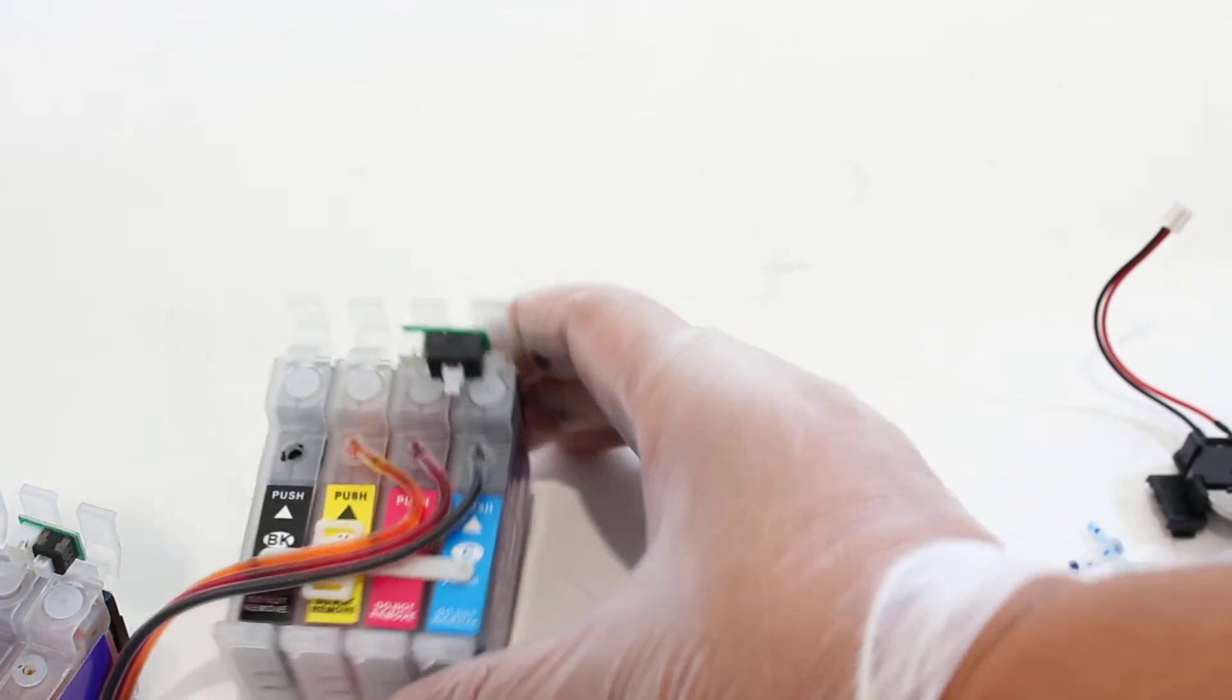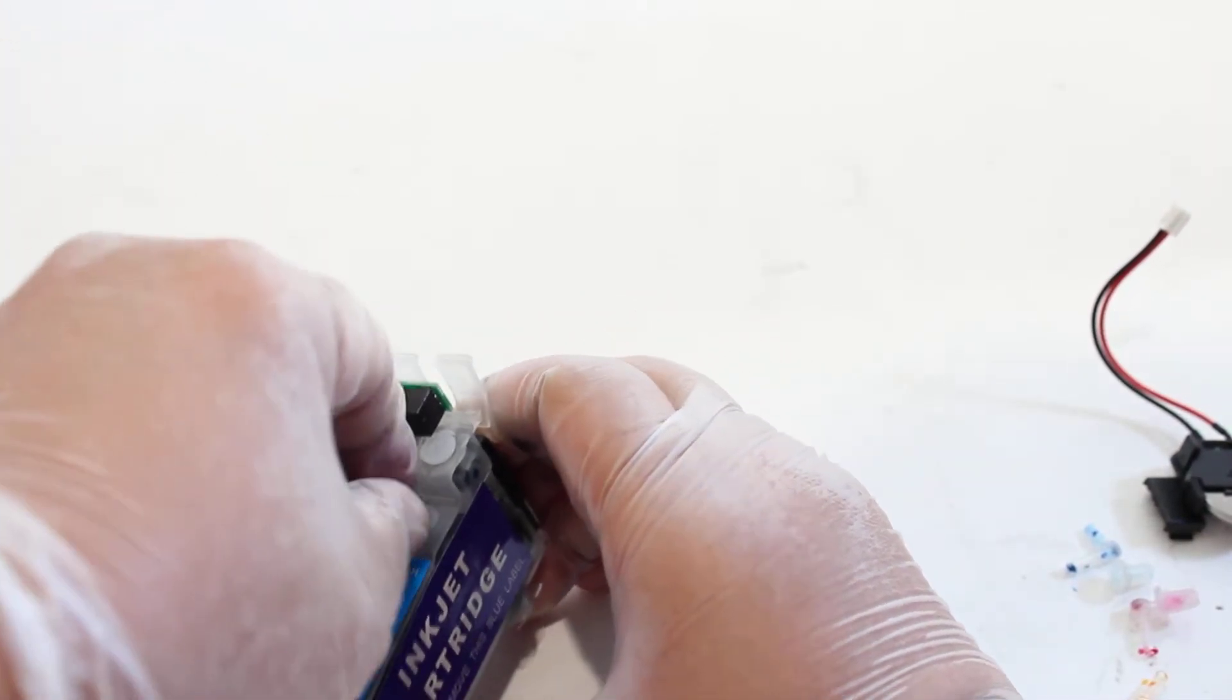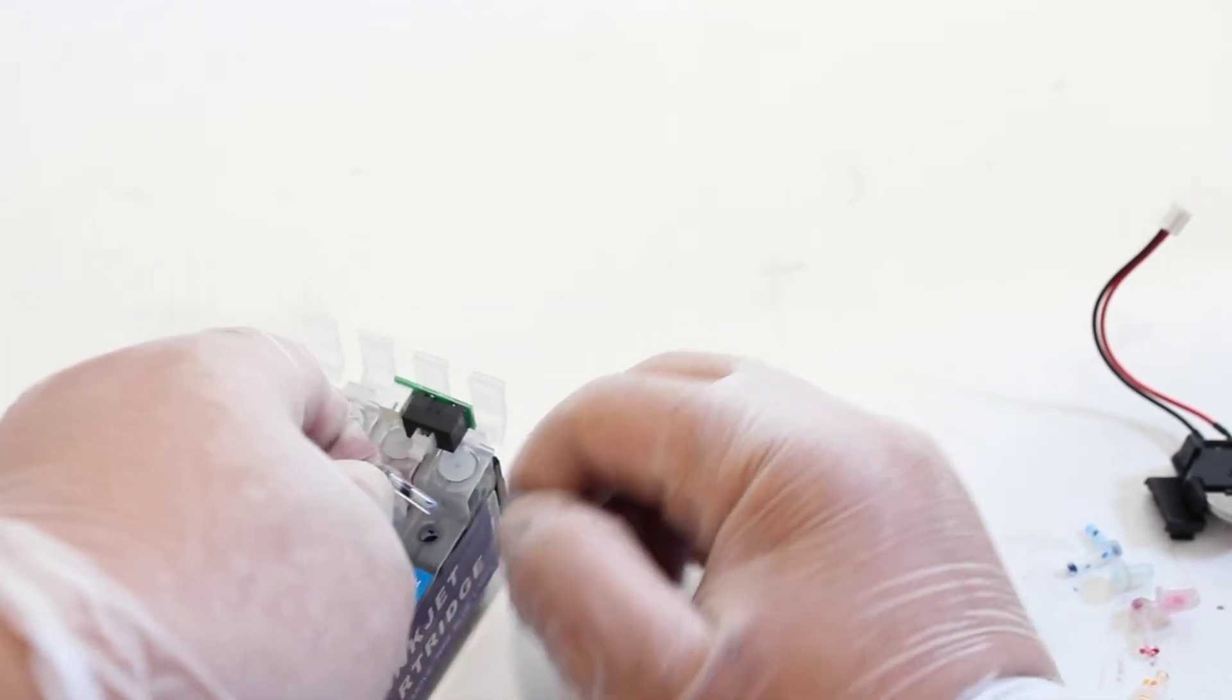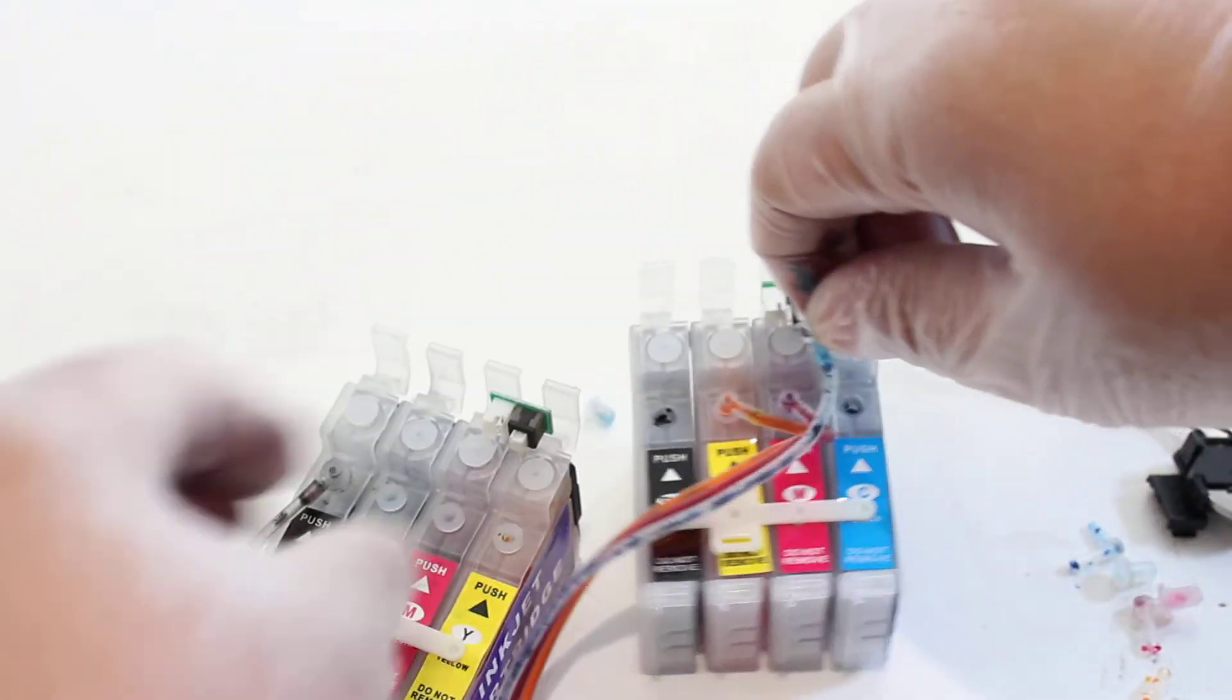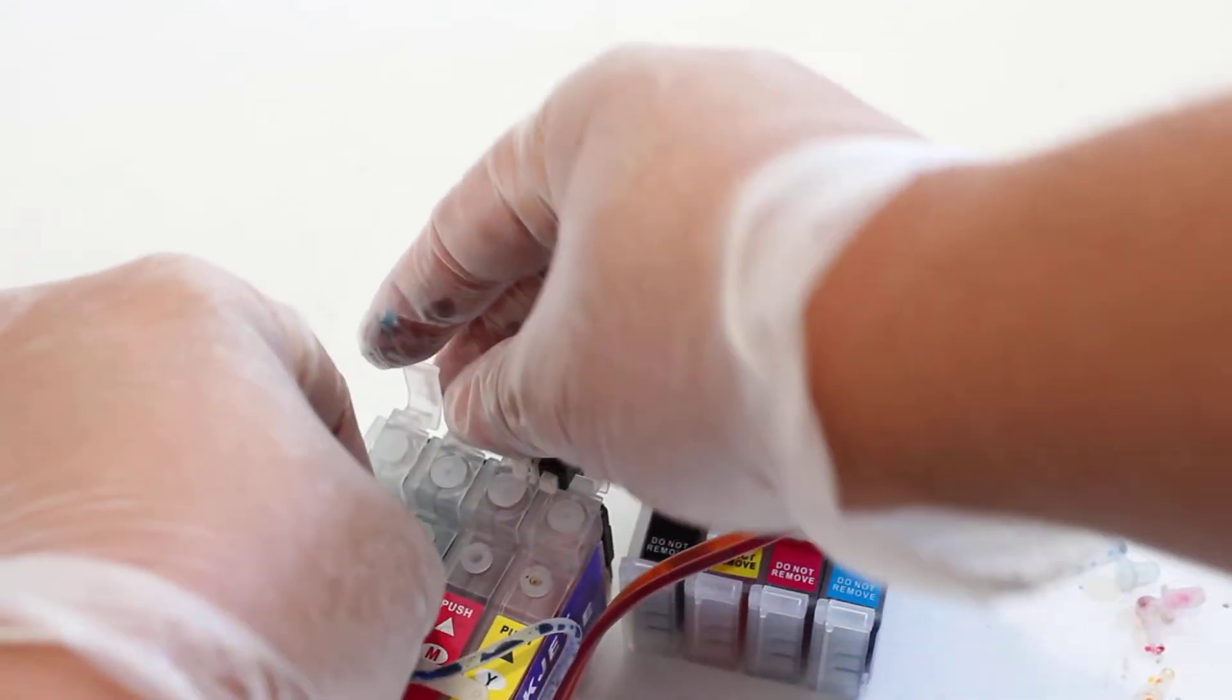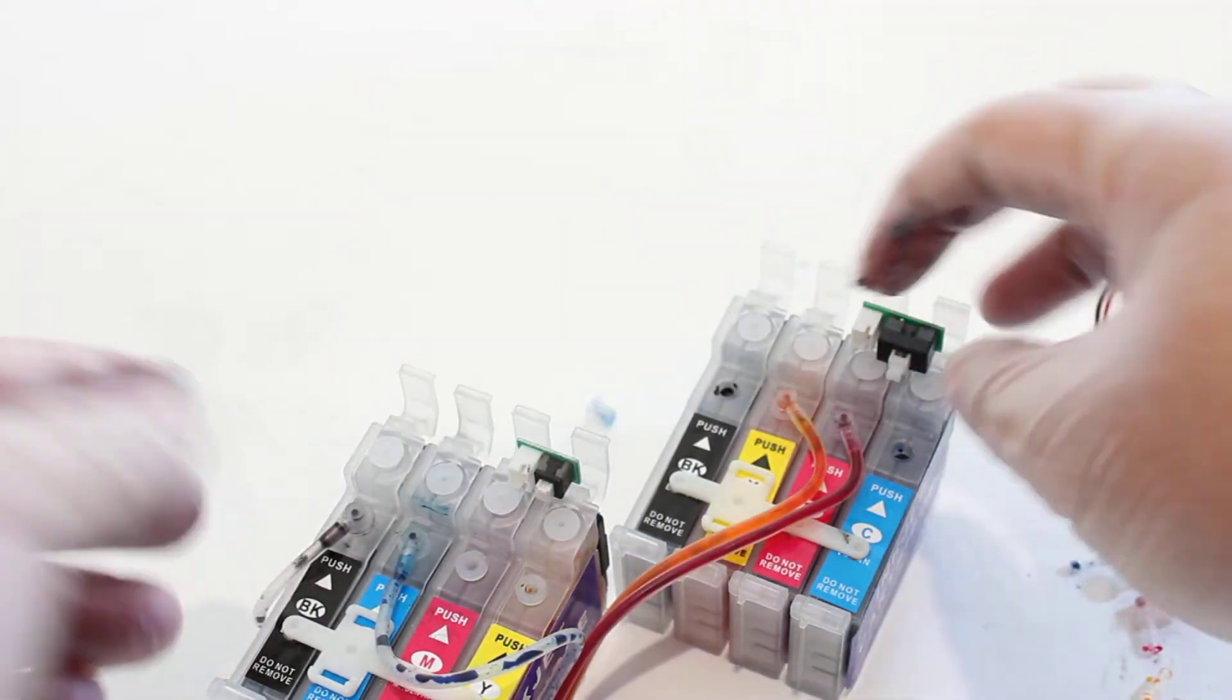Next color is cyan so I'm going to take the cyan out. Take that grommet out. Again you don't want to have the grommet inserted into the cartridge with the elbow because it will cause it to suck into the cartridge itself and that's going to be a bigger issue.